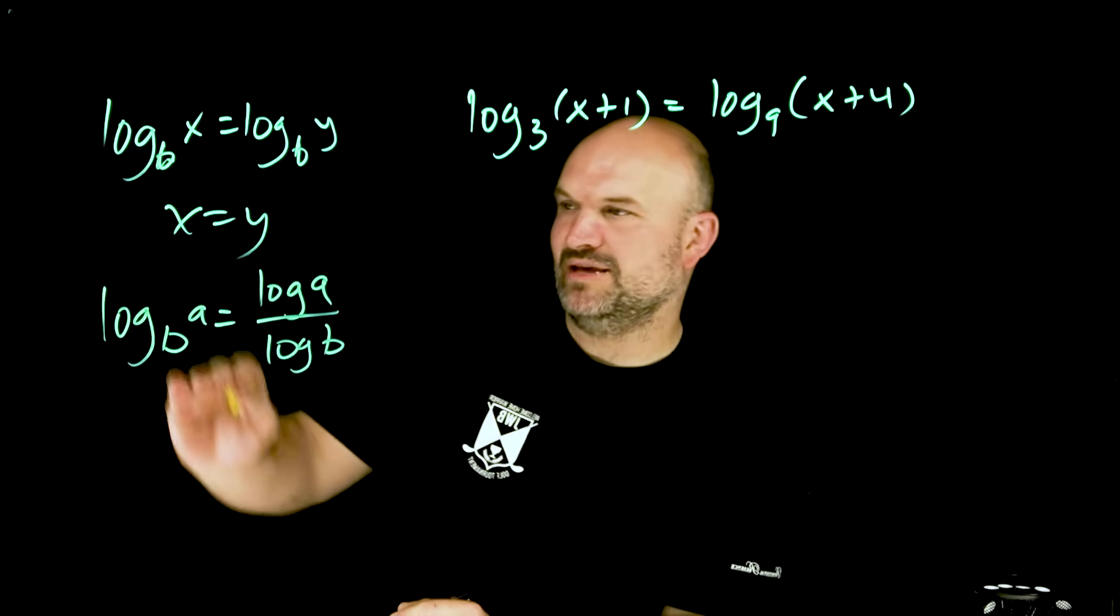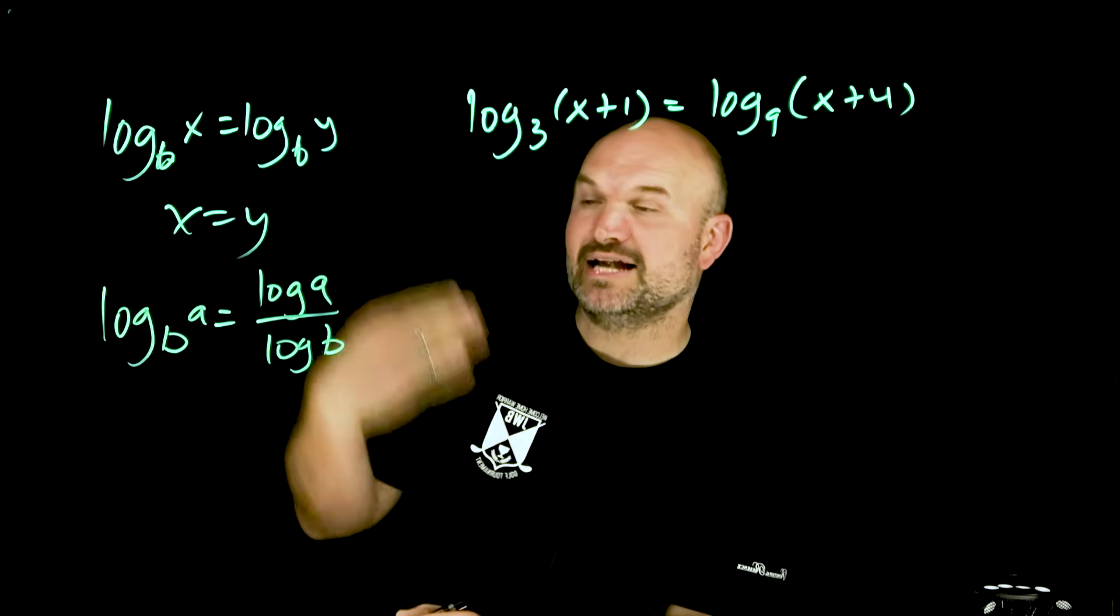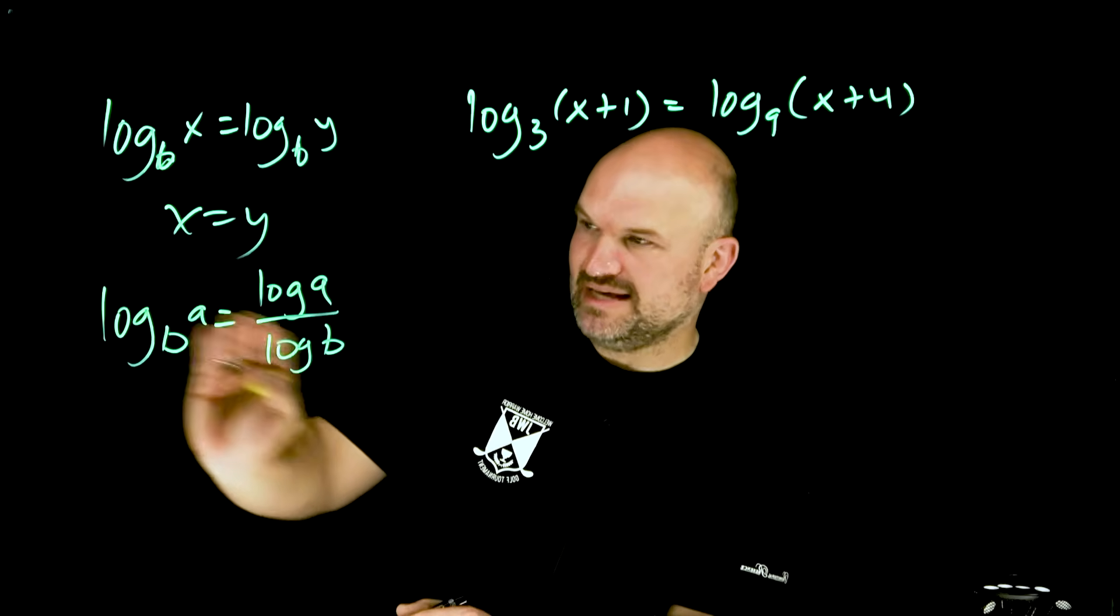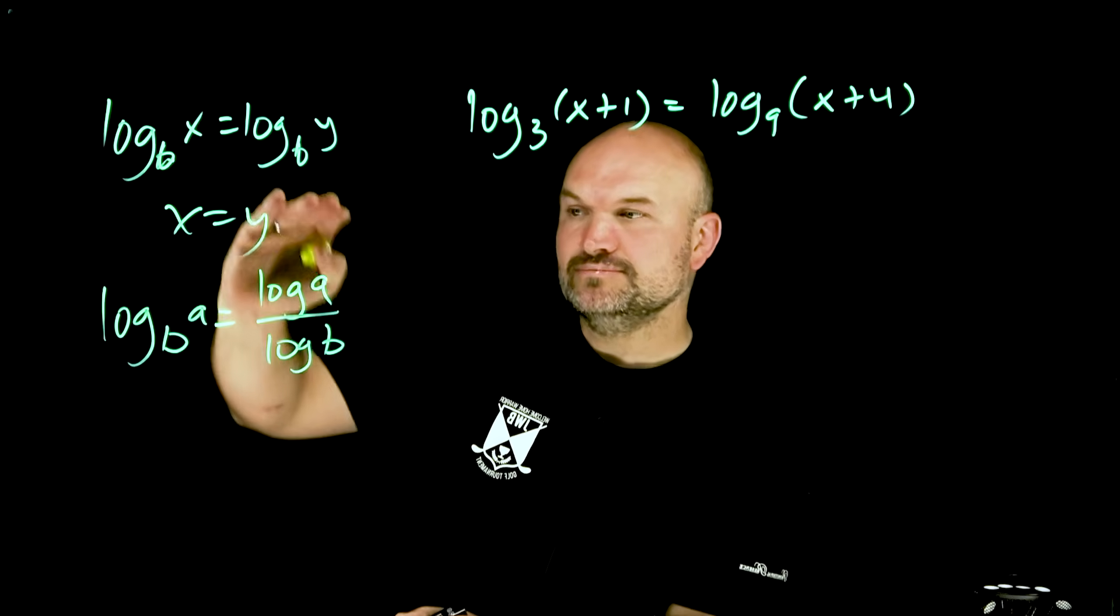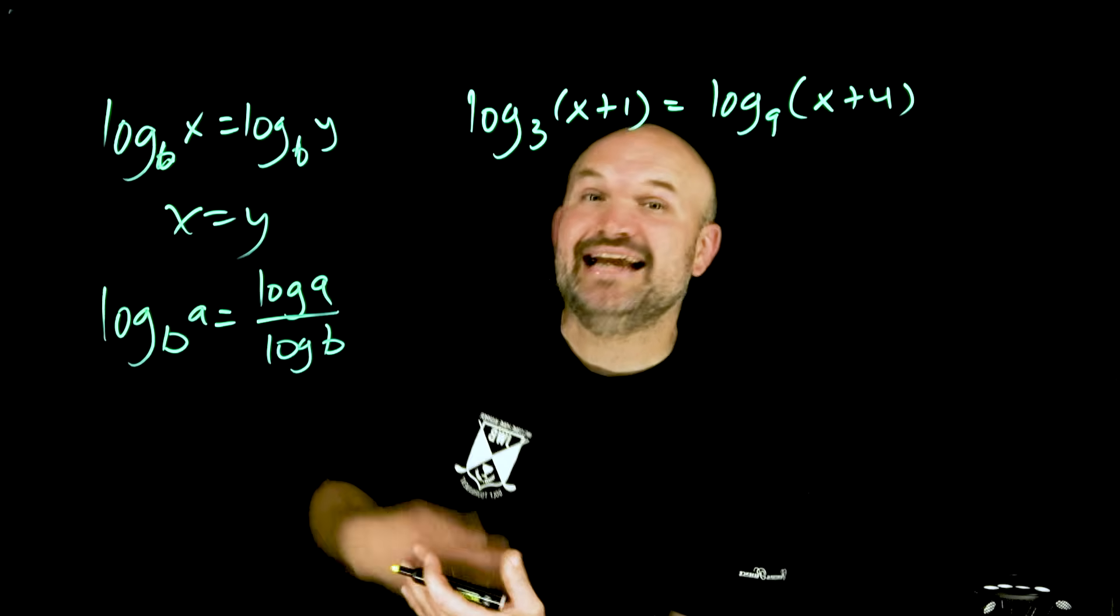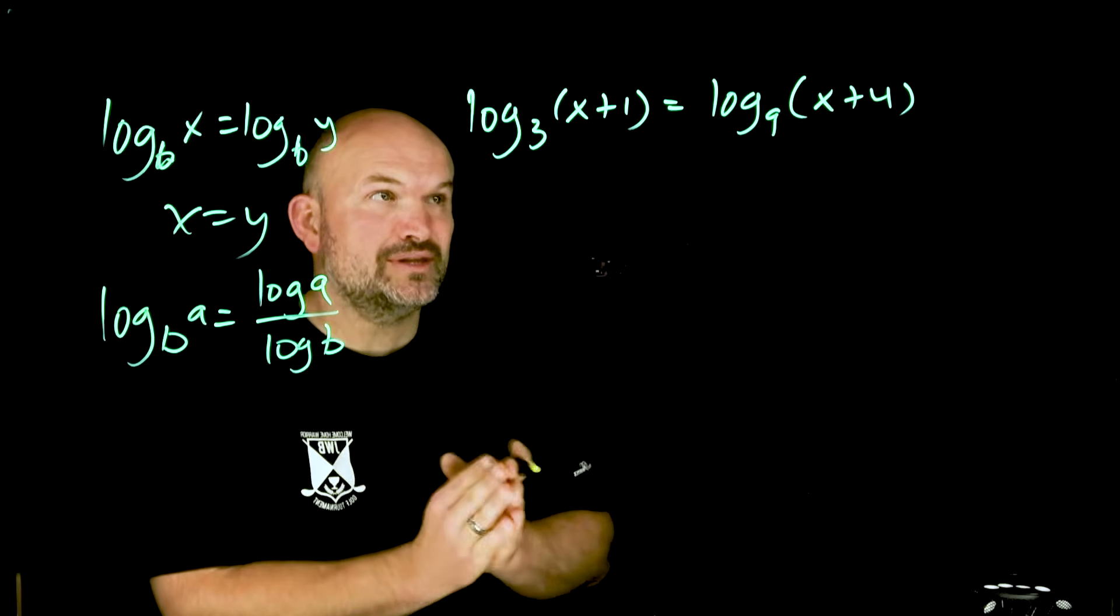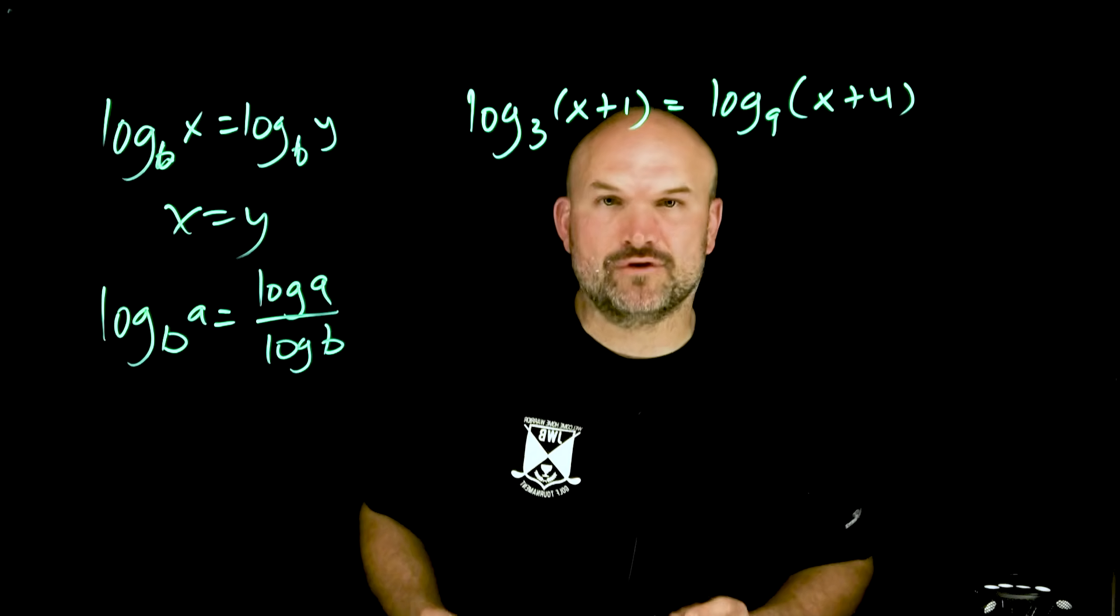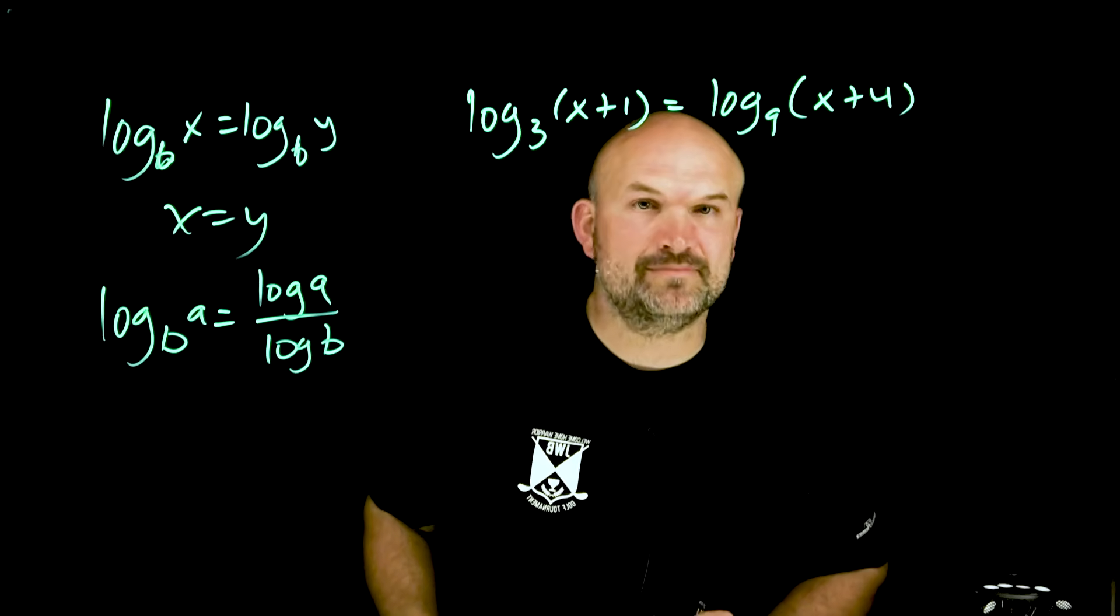And if you remember the change of base formula, if I have a log base b of a, I can rewrite that as the log of a, which is my argument, over the log of b, which is going to be my base. Now in this example I'm using base 10, but you can also use the natural base or you can use any base that you want to. That's really, really important because if I get to pick the base that I want my change of base formula to follow, I want to pick log base 3.